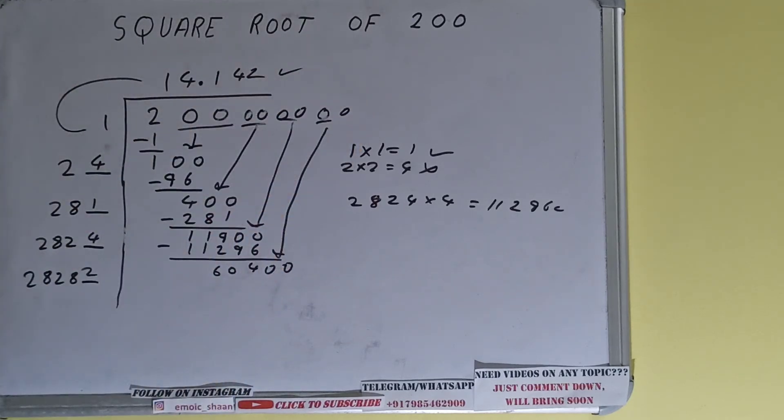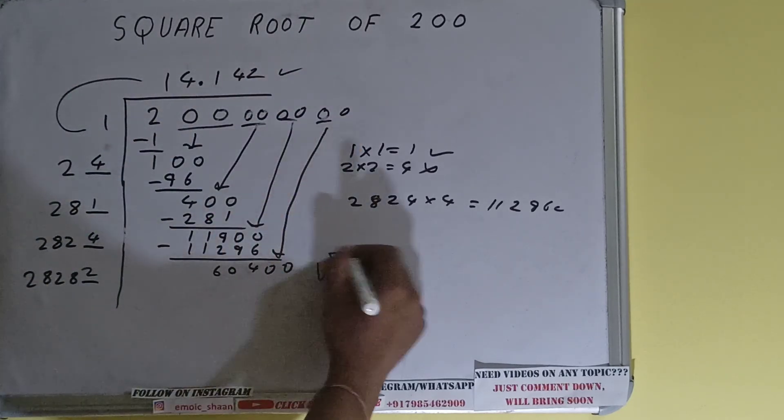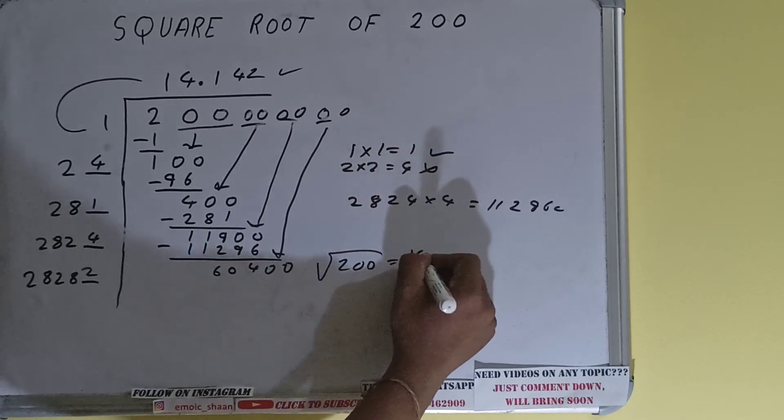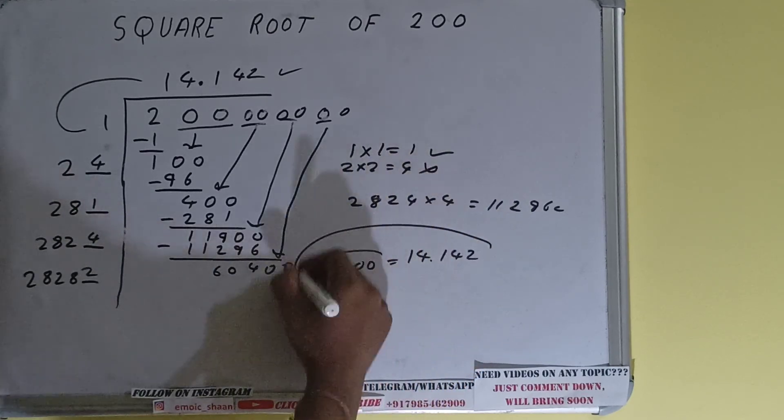So square root of 200 will be 14.142 and that would be the answer.